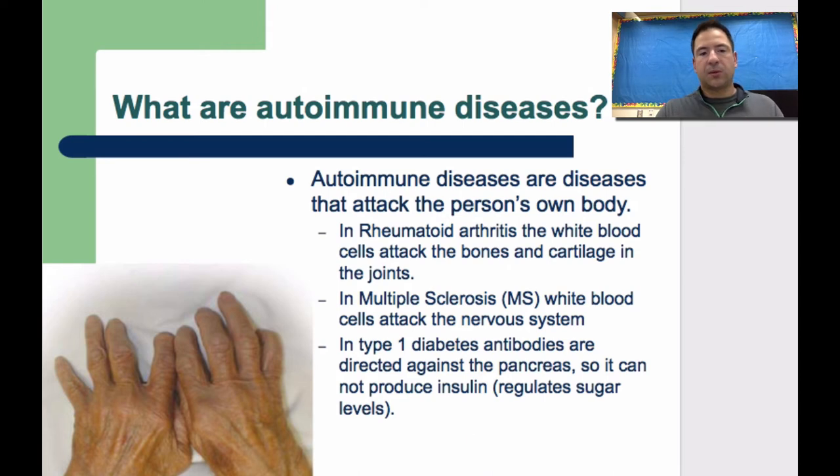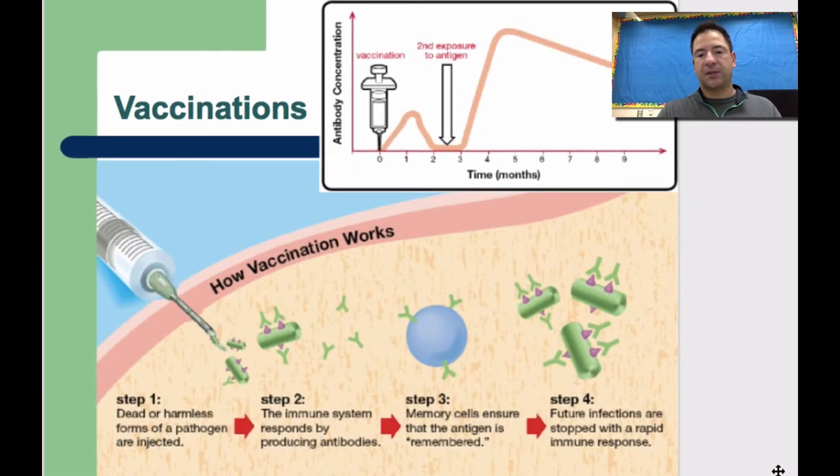So the next thing we're going to talk about is vaccinations. Now vaccinations are basically what it is, is being introduced a dead or harmless form of a pathogen. So that pathogen that's a dead or weakened pathogen that's injected into the body. So you can see up here, you can see this needle here. So what's happening here is we inject that dead or weak or harmless pathogen...